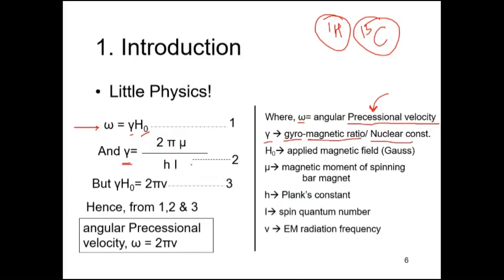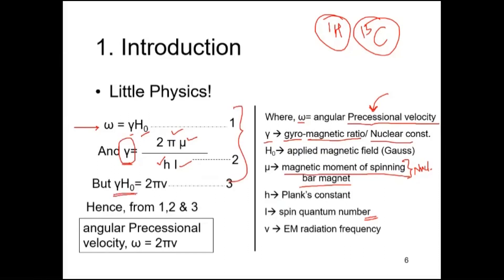The gyromagnetic ratio gamma is sometimes also called the magnetogyric ratio. It equals 2π times mu divided by h, where mu is the magnetic moment of the nucleus — the nucleus is considered as a spinning bar magnet. H is Planck's constant and I is the spin quantum number for that nucleus/element.